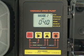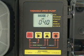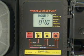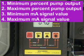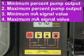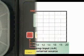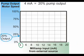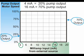When operating in mode number two, the 4 to 20 milliamp mode, the pump's output speed will adjust automatically based on the value of the 4 to 20 milliamp input signal. Four values can be programmed: the minimum and maximum percentages of pump output and the corresponding minimum and maximum milliamp input signal values. In this example, 4 milliamps will result in a pump output of 20% and 16 milliamps will result in a pump output of 70%.